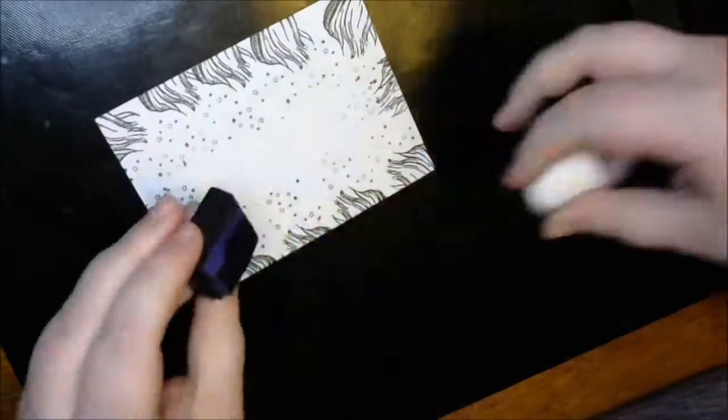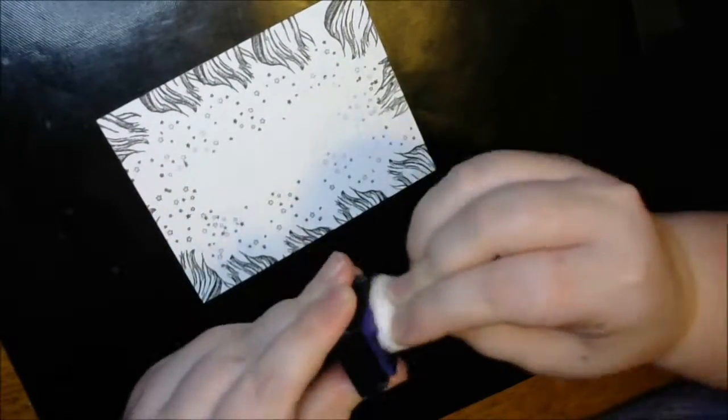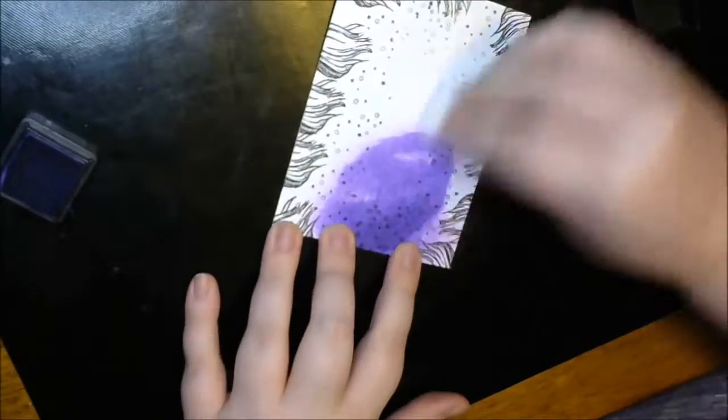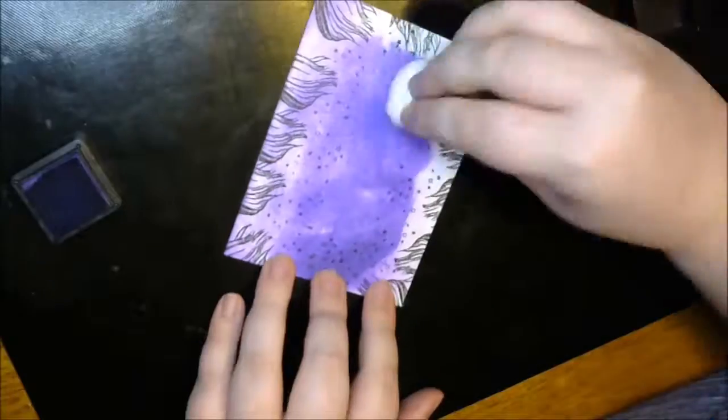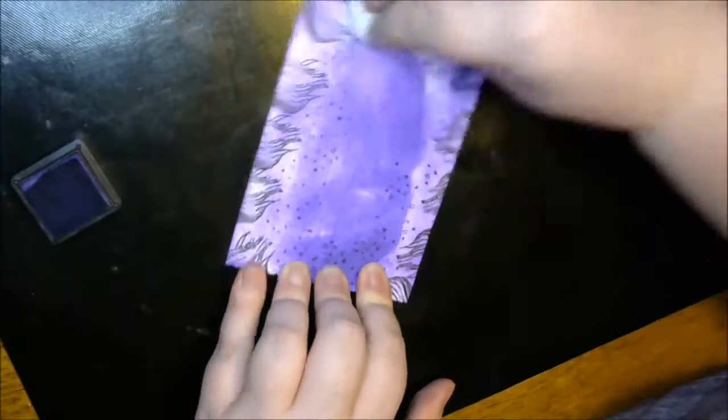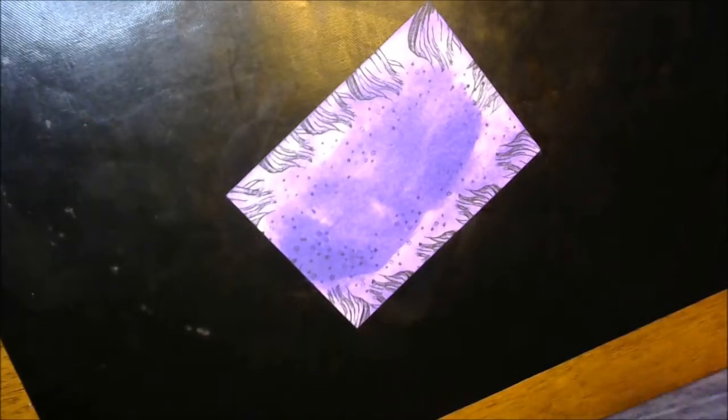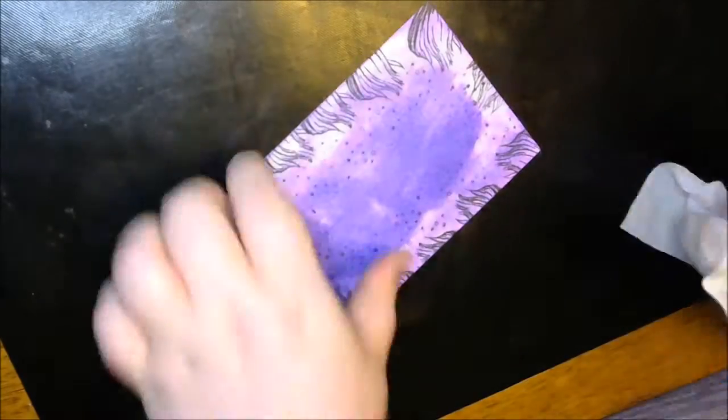Now I take some distress ink in purple—wilted violet—and my cotton ball and just blend it out. I took a really heavy hand on the center and then spread it out on the rest.